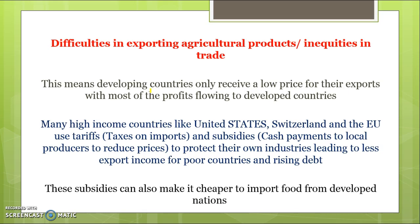Developing countries receive a low price for their exports, and most of the profits flow to developed economies. The other problem is that many high-income countries — like the US, Switzerland, and the EU — put tariffs on imports coming from developing countries, and they also subsidize their own domestic production by paying cash to local producers to protect their own industries. This makes it hard for developing countries to export enough to offset their imports, leading to rising debt. These subsidies also make products from developed nations cheaper to import.